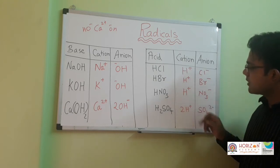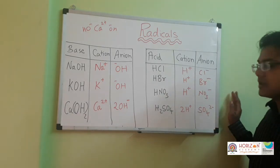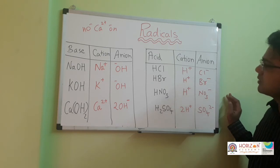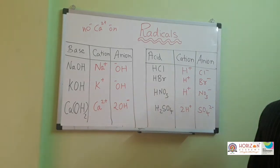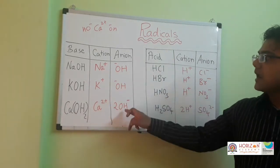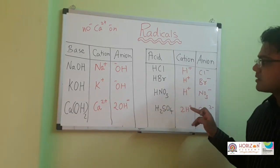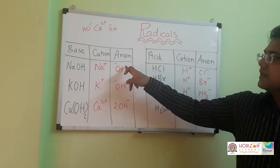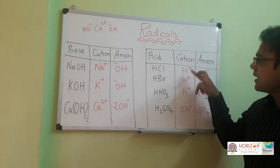All positive ions are known as basic radicals and negative ions are known as acidic radicals. In bases, the common anion is OH minus, and in acids the common cation is H plus. So in most bases the acidic radical is OH minus, and in acids the basic radical is H plus.